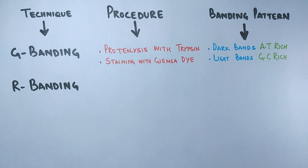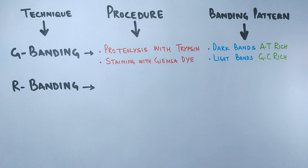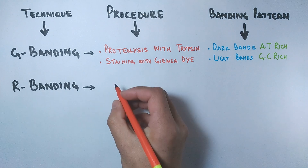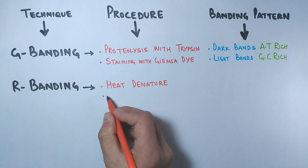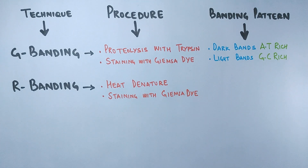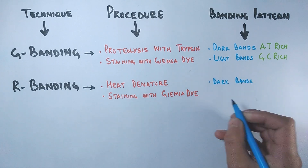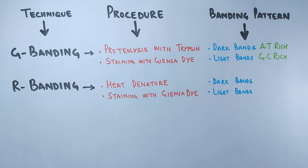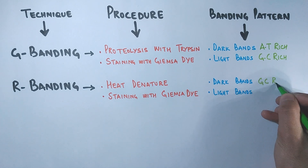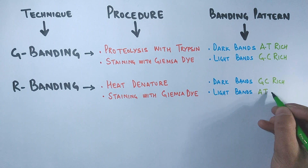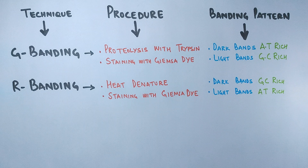Then there is R-banding, which stands for reverse banding of Giemsa. It is called reverse banding because the dark bands in G-banding are light bands in R-banding and vice versa. First the chromosomes are heat denatured, then stained with Giemsa. From this procedure we get dark and light bands, but here the dark bands are GC-rich while the light bands are AT-rich — the reverse of G-banding.